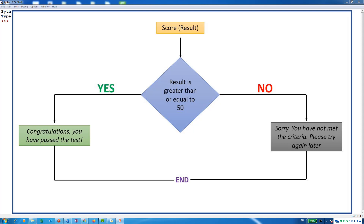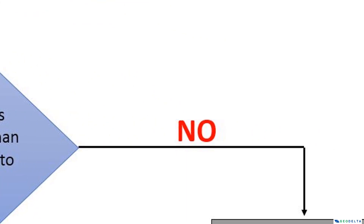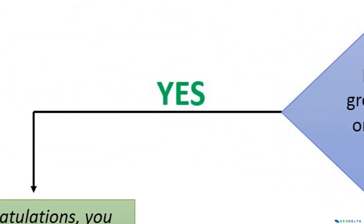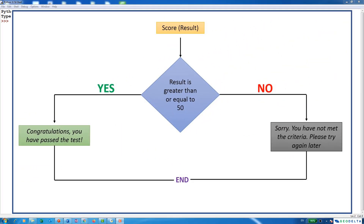We want to create a program where if the total mark a student gets is less than 50, we will ask Python to say sorry, you have not met the criteria, please try again later. But if the student has gotten a mark higher than 50, the program will say congratulations, you have passed the test. Visually, as you can see from this diagram, the whole structure can be put into this kind of representation. There can only be two possible outcomes: either the person gets a score greater than or equal to 50, or the person gets less than 50. So let's see how we can translate this scenario into code.